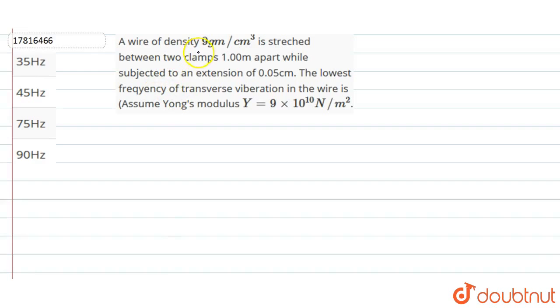The question is, a wire of density 9 grams per centimeter cube. We have only a wire with its density. We have stretched it under two clamps. The distance we have given is 1 meter. The extension is 0.05 centimeter. The lowest frequency of transverse vibration. Young's modulus is given.